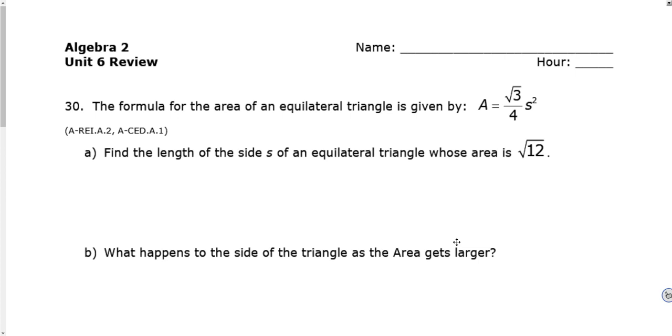Okay, this is the application section. Application means word problems, and word problems just means formulas and plug the numbers in. So the formula for the area of an equilateral triangle is A equals radical 3 over 4 times S squared. The first thing is we want to find the length of the side of the equilateral triangle whose area is radical 12. So this part is important because that means that's what A is. So we've got to plug in radical 12 equals radical 3 over 4 S squared.